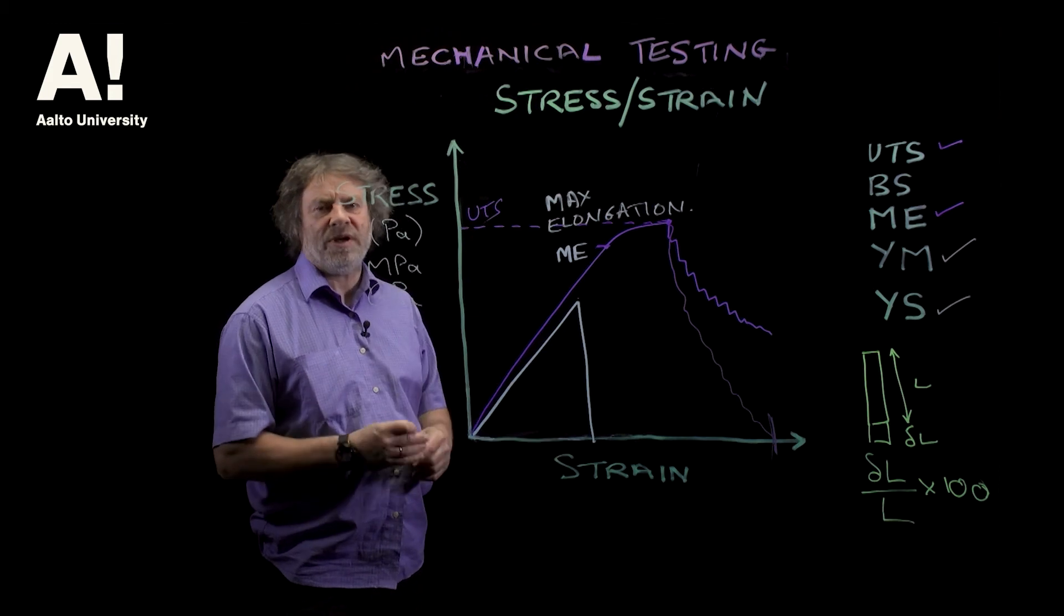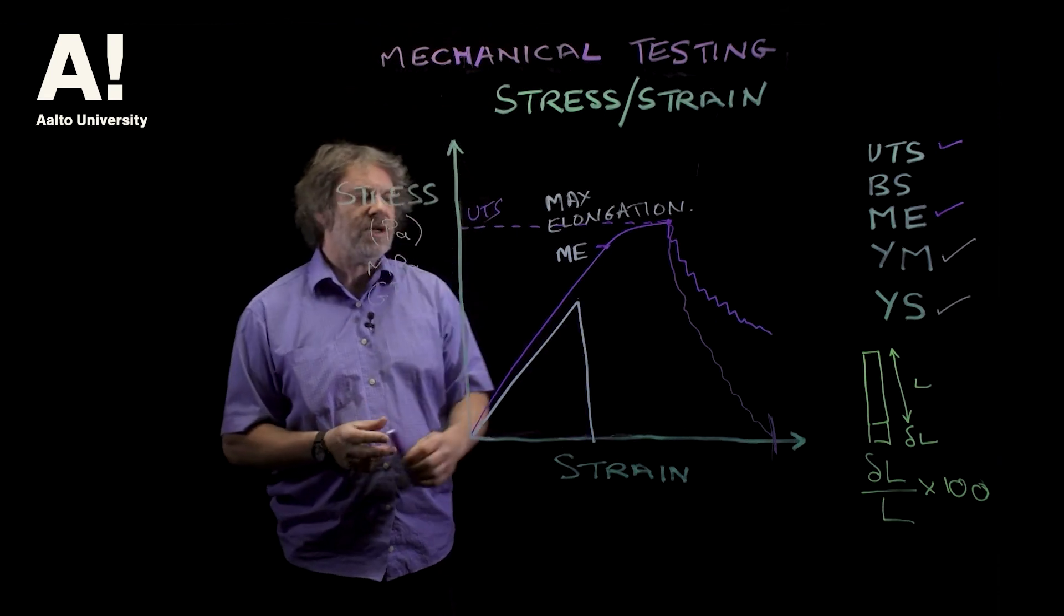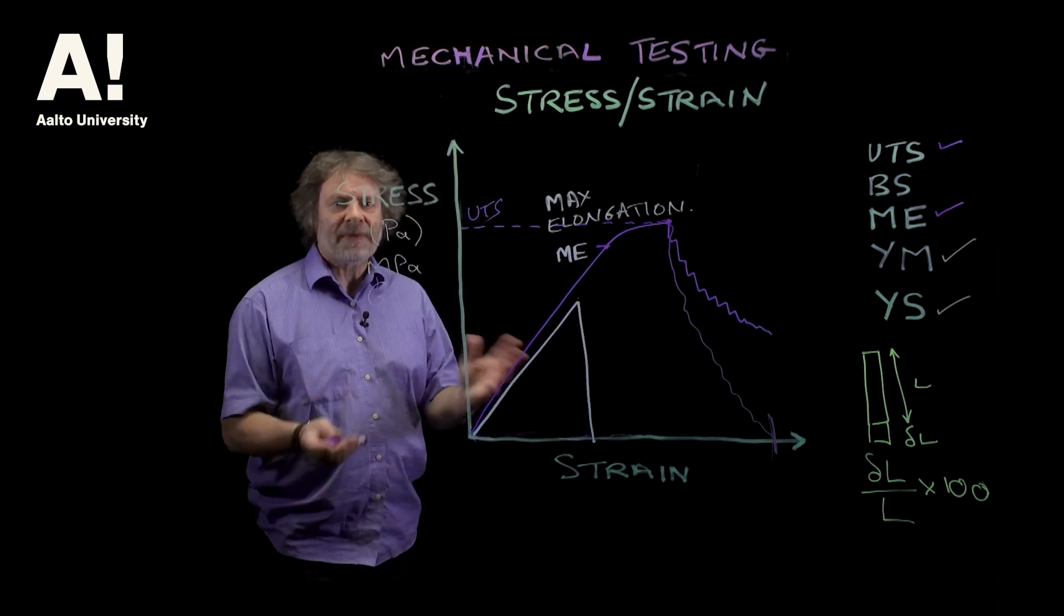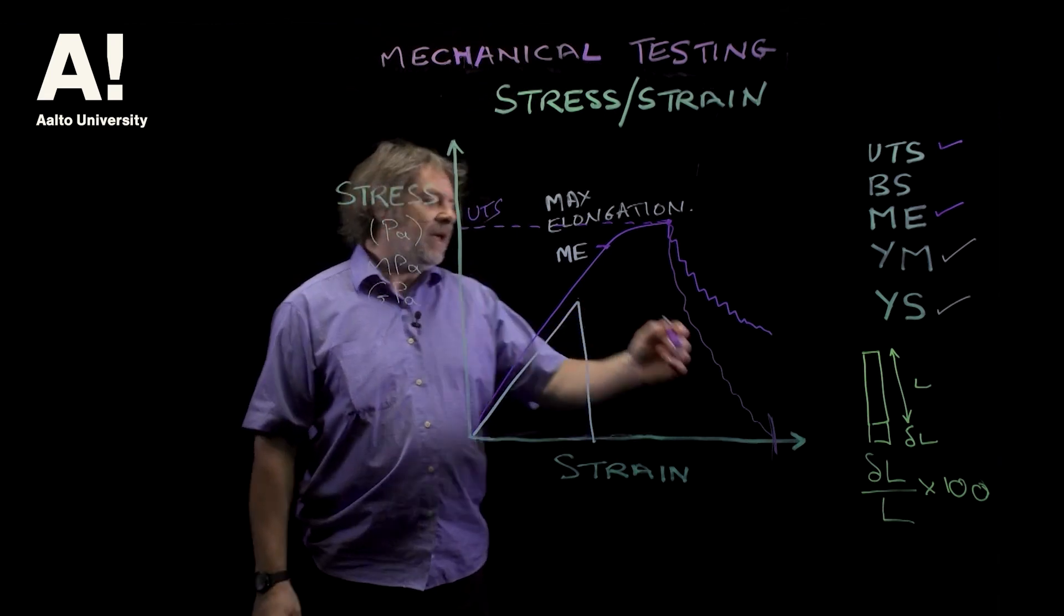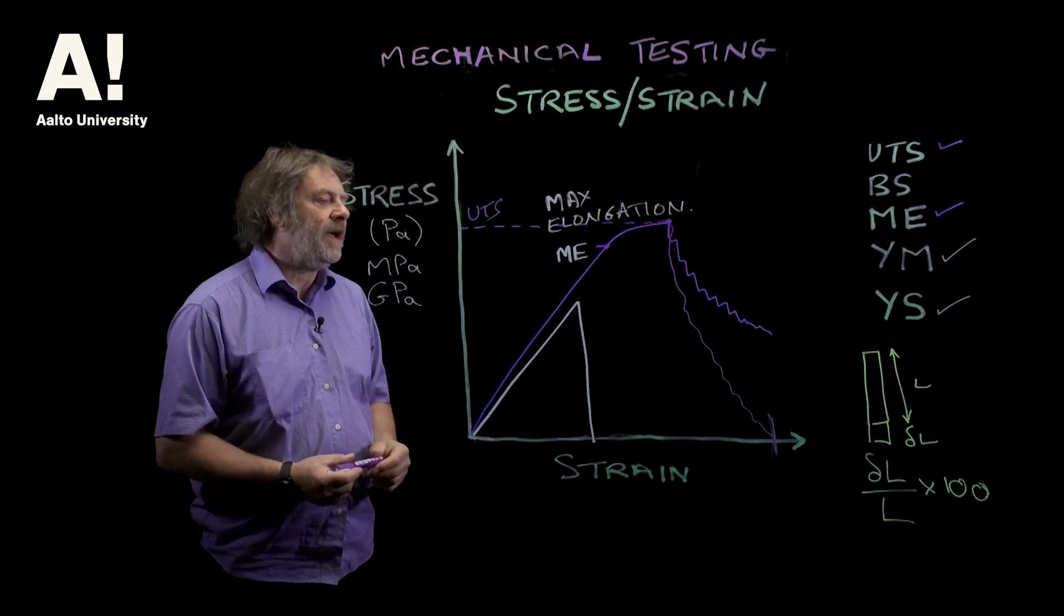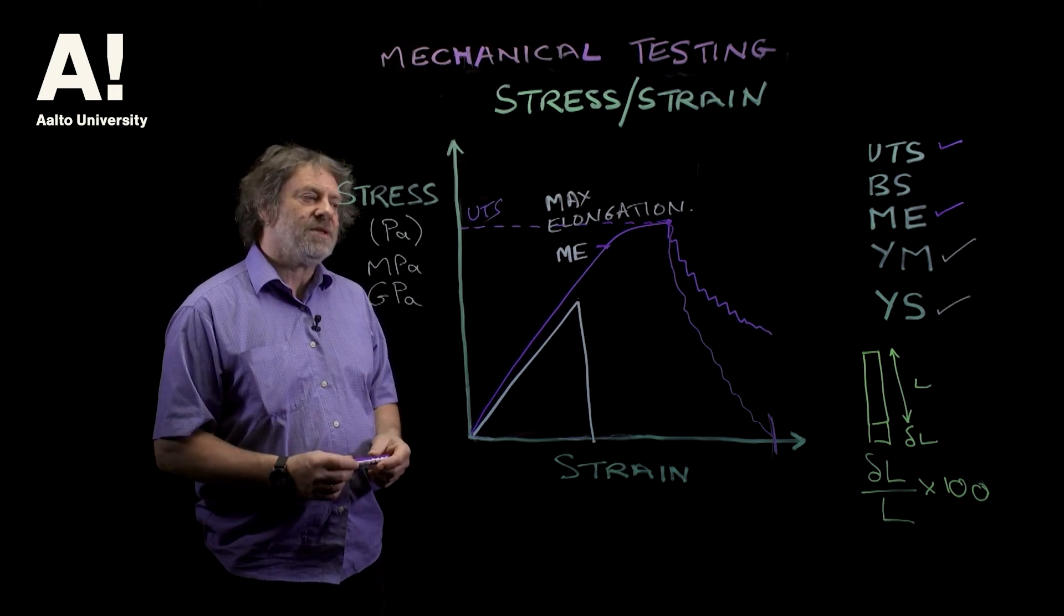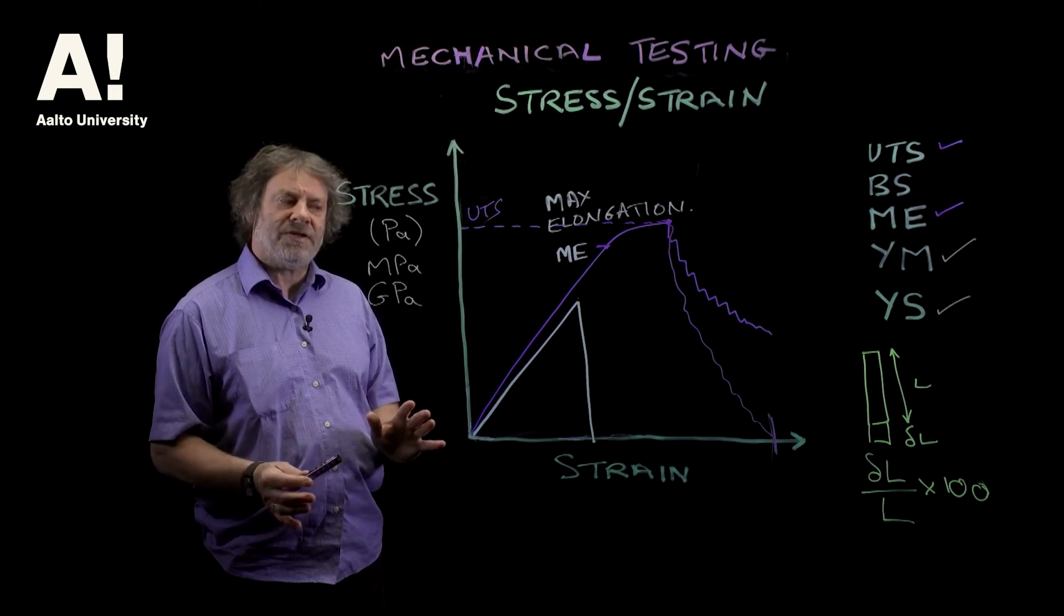But it may or may not be a useful property to measure, but it will tell you something. If the maximum elongation occurs at the failure point, it will tell you it's a brittle material. If the maximum elongation doesn't occur at this failure point, then it's not brittle, it's a tough material, it has a different mode of failure. So these mode of failures are very important.